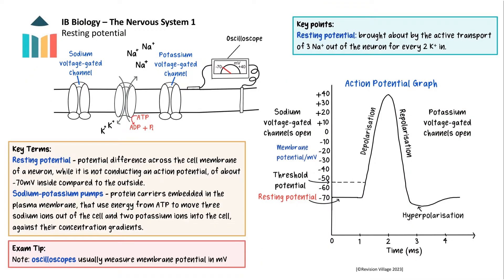Now that we have reviewed the structure of a myelinated neuron, let's look at how the nervous impulse is conducted, starting with a typical unmyelinated neuron. A logical place to start is when the neuron is not transmitting an impulse. When an action potential is not being transmitted, the neuron is said to be at resting potential. During this stage, the sodium-potassium pumps in the membrane of the neuron use the energy from ATP to pump three sodium ions out of the neuron for every two potassium ions in, causing the inside of the neuron to become negative compared to the outside. There are negatively charged organic ions permanently located inside the neuron, and also many potassium leakage channels in the neuron's plasma membrane, allowing potassium ions to leak out of the neuron.